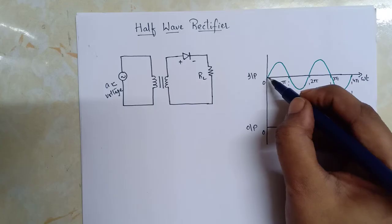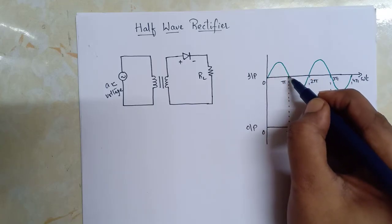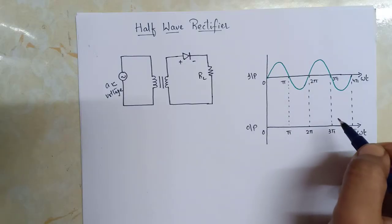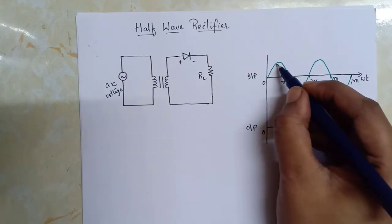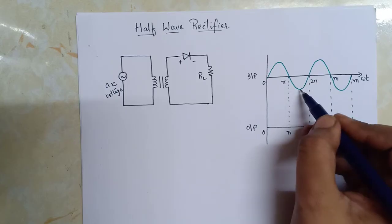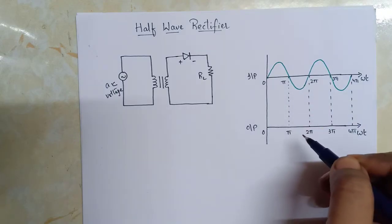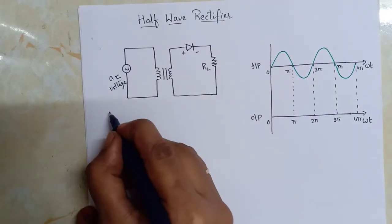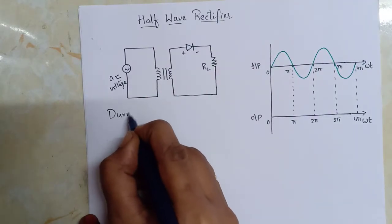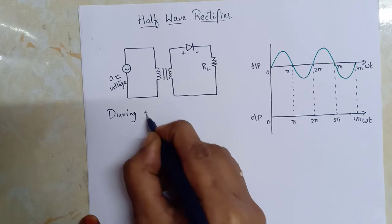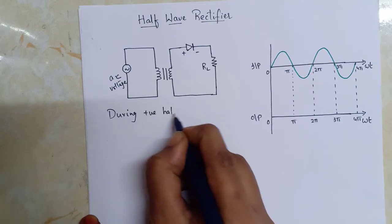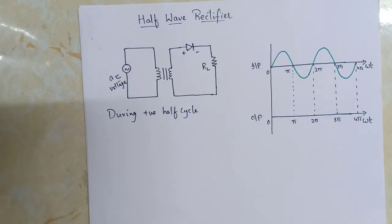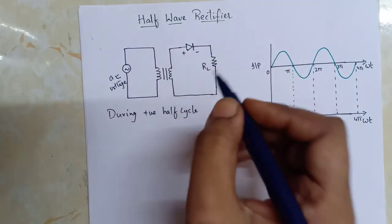When the AC voltage is applied, as we all know, this is the AC voltage waveform. This is a positive going cycle and this is the negative going cycle. Let us call this the positive half cycle and this the negative half cycle. Now let us see how the circuit behaves during the positive half cycle.